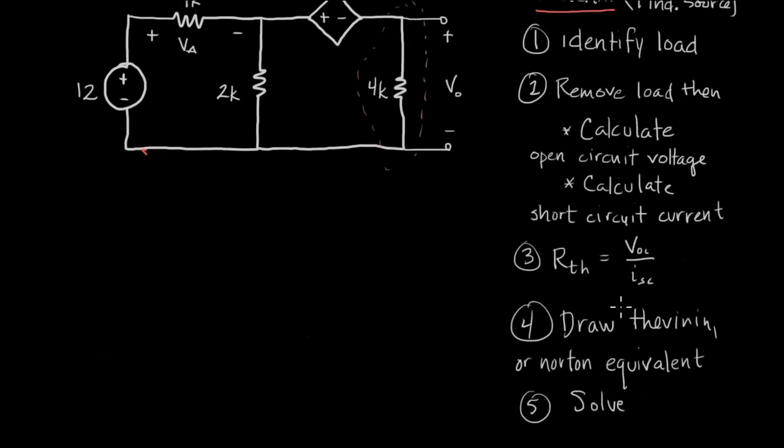We'll do the ratio of the voltage that we found to the current that we find. And then we can finally use either VOC and R_Thevenin or ISC and R_Thevenin to calculate the Thevenin or Norton equivalent, and then we can solve the problem.